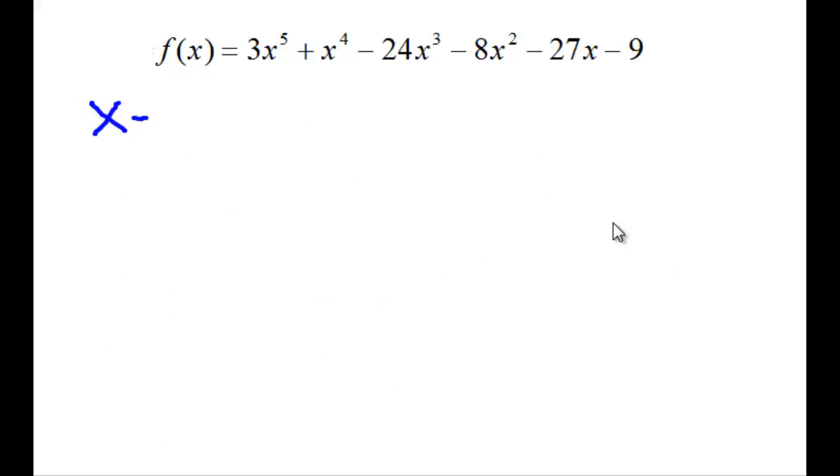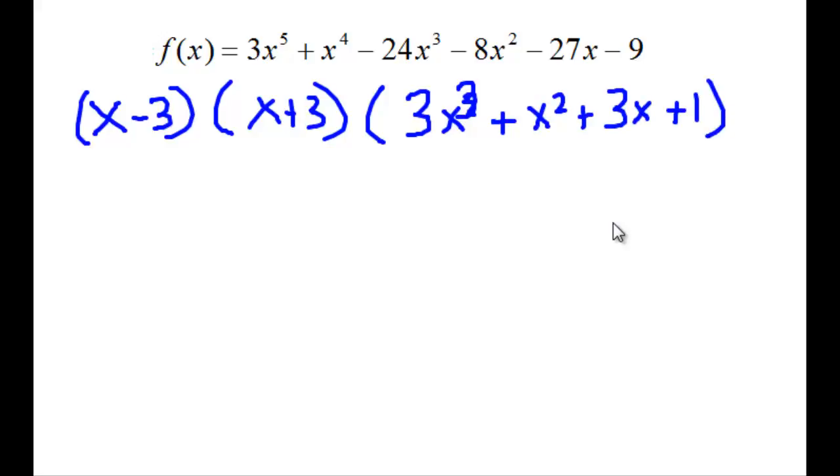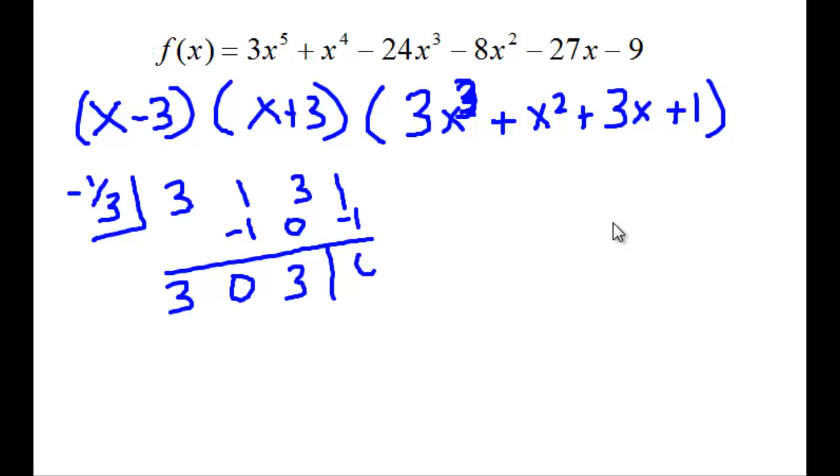So moving on to clearing off the page here, we were left with x minus 3, x plus 3, and 3x cubed, plus x squared, plus 3x plus 1. So we have one more left, and that is negative 1/3. From our graph, it was negative 1/3, so we've got 3, 1, 3, 1. 3 times negative 1/3 is negative 1, and 3 times negative 1/3 is negative 1, again.